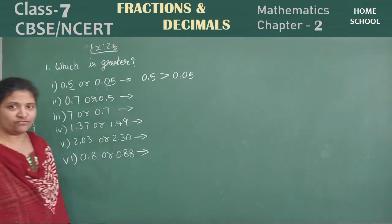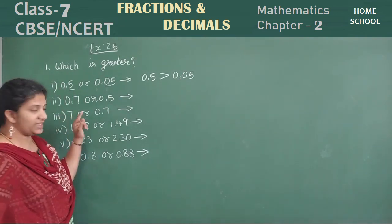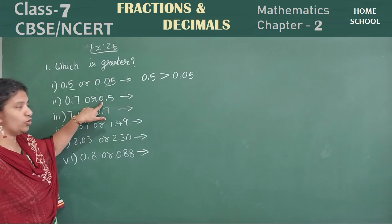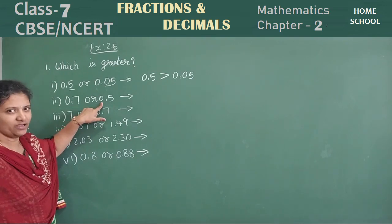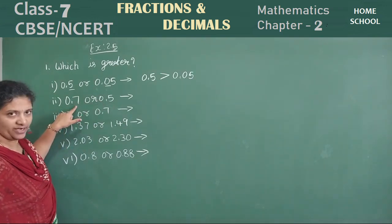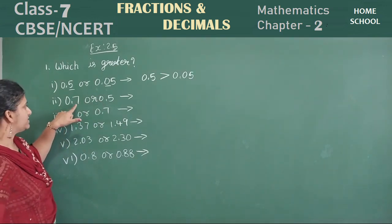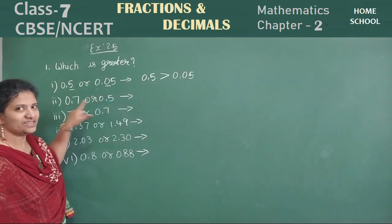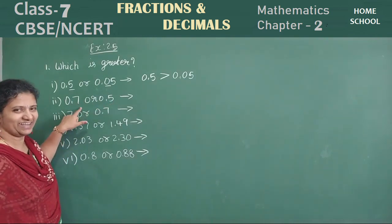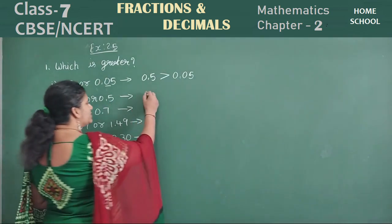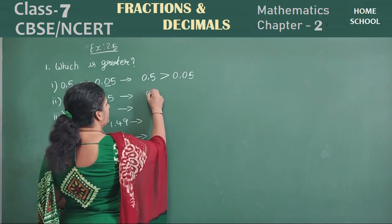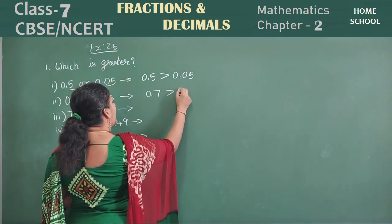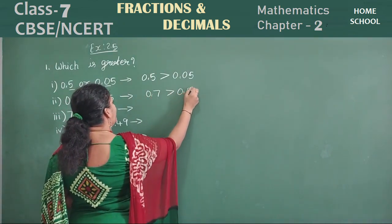Is it followed? Now you need to say this: zero, zero — same there. So shift to the next value in your decimal. Seven, five — which is greater? Seven is greater, right? So how can you write this one? Point seven is greater than point five.